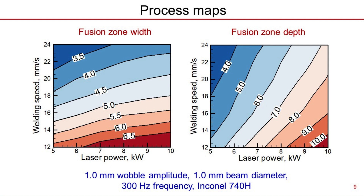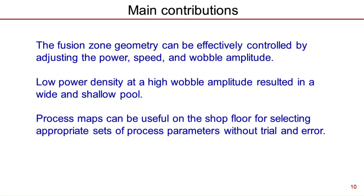In this research, we uncovered the effects of wobble welding parameters — laser power, welding speed, amplitude, and frequency — on the laser energy distribution, keyhole formation, and fusion zone geometry during keyhole mode wobble laser welding of Cornel 740H. We showed that the fusion zone geometry can be effectively controlled by adjusting the power, speed, and wobble amplitude. In particular, the low power density at a high wobble amplitude resulted in a wide and shallow pool. Process maps resulting from this work can be useful on the shop floor for selecting appropriate sets of process parameters without trial and error.